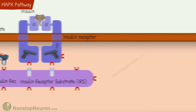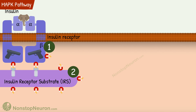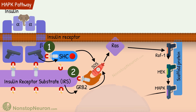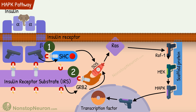Now the second one is the MAPK pathway. It begins in one of two ways: either the insulin receptor phosphorylates SHC, or IRS activates a protein called growth factor receptor bound protein 2, or GRB2. Both phosphorylated SHC and activated GRB2 activate SOS. SOS then activates RAS. Then we have a series of events of the MAPK pathway, which we have already discussed in detail in the video on receptor tyrosine kinase. The result of that pathway is increased gene expression and growth.